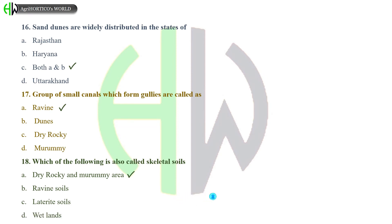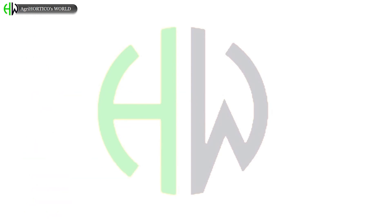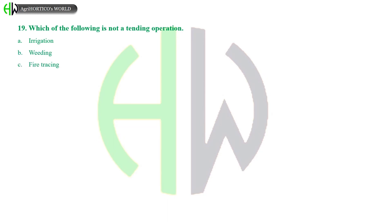Which of the following is not a tending operation? Options: Irrigation, Weeding, Fire tracing, or Vegetative propagation. And the correct answer is Vegetative propagation.